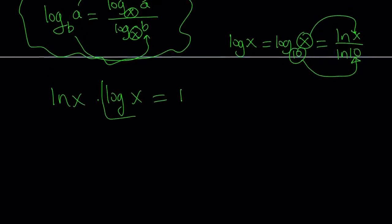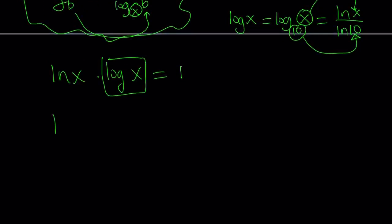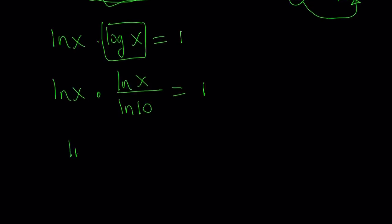We replace log x with ln x over ln 10. So we have ln x multiplied by ln x over ln 10 equals 1. Now, ln 10 is a constant, which is good. We have ln x times ln x with the same base, which is really cool. Cross multiplying gives us ln x squared equals ln 10.